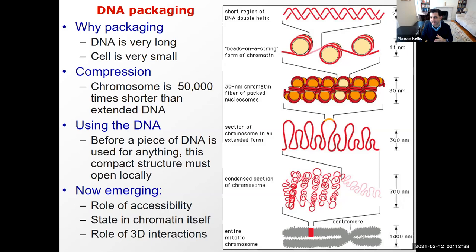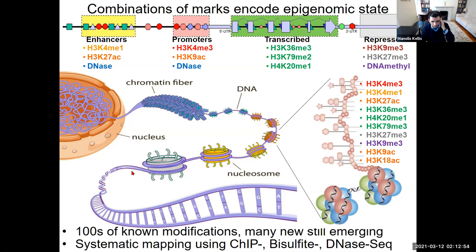It would reach from Boston to Jupiter ten times — and that's for every single person on this Zoom call. It's an immense feat of compacting that we can fit so much DNA inside every one of our cells. The way it is compacted is actually extremely information-carrying: every 147 base pairs of DNA is looped around each nucleosome.